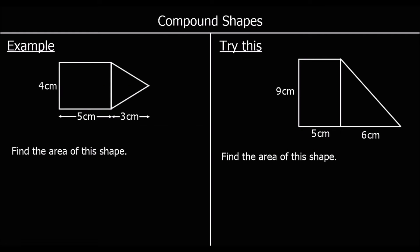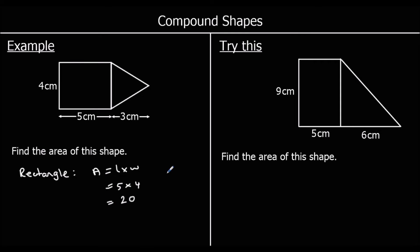Now a different compound shape — this time the question is to find the area, and we've got a rectangle and a triangle. The area of a rectangle is length times width. Our rectangle has a length of 5 and a width of 4, so 5 times 4 is 20 — measured in squares, that's 20 cm².